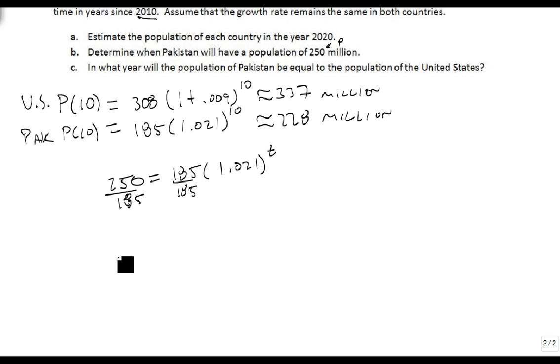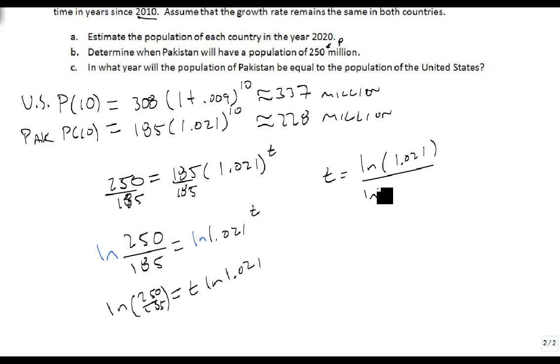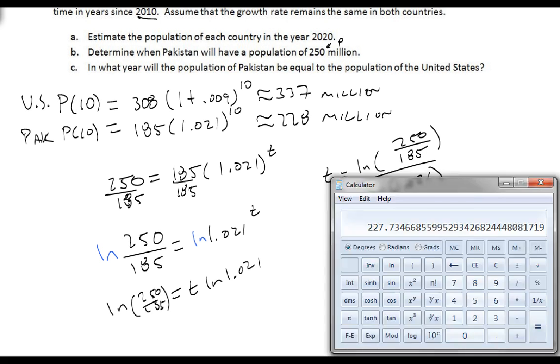I'll let the calculator take care of it. Let's take the natural log of both sides, so t times the natural log of 1.021 equals the natural log of 250 over 185. So t equals the natural log of 250 over 185 divided by the natural log of 1.021. We get out our calculator: 250 divided by 185, take the natural log of that, divide that by the natural log of 1.021, and hit equals. It says it should take approximately 14.5 years.